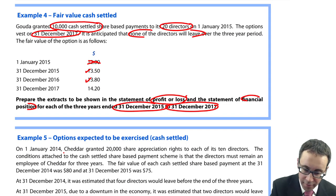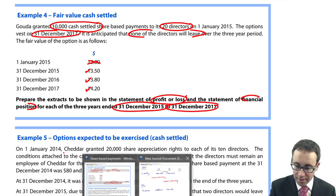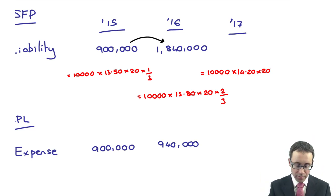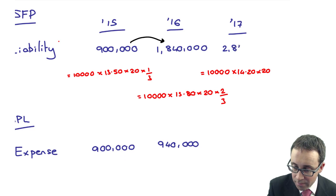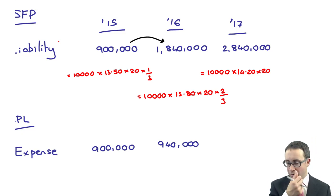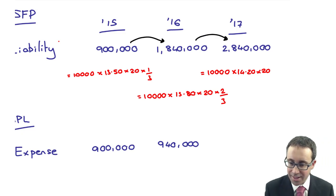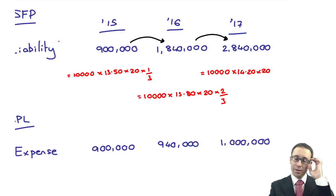Third and final year, fair value is $14.20. So here we are, $10,000 multiplied by $14.20, multiplied by 20 directors. You can multiply by 3 over 3 if you want, but I'm not too worried. That gives me a liability at the end of that third and final year as $2,840,000. And the movement from 2016 to 2017 is $1,000,000.